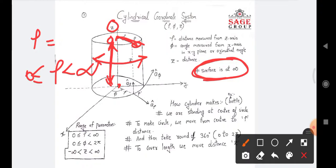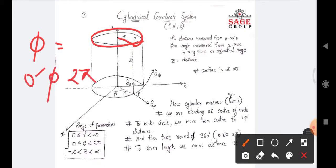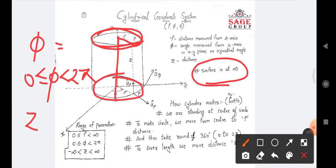Our second parameter is phi. The range of phi: we make a circle of 360 degrees, so the circle goes from 0 to 2π, and phi ranges from 0 ≤ phi < 2π. Our third parameter is z, which is the length of the cylinder. There is an upper surface and a bottom surface, and the surface is always at infinity. So the range of z is from minus infinity to infinity: −∞ < z < ∞.